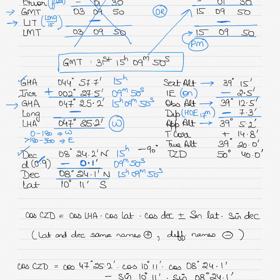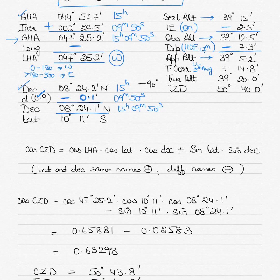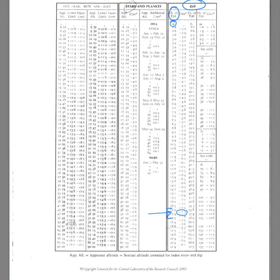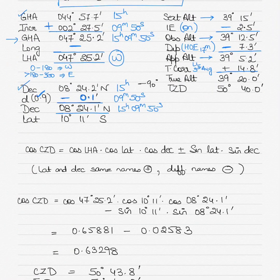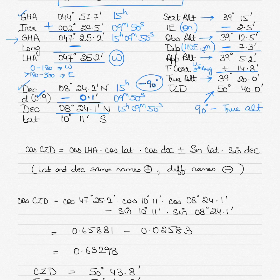Subtracting the height of eye correction gives an apparent altitude of 39 degrees 5.2 minutes. Using this apparent altitude for the Sun's lower limb on 31st August, I find the total correction. Going to the same page, under the total correction column for April to September, lower limb, at 39 degrees 7.2 minutes apparent altitude — no interpolation required — the total correction is 14.8. Applying this gives the true altitude, and then subtracting from 90 degrees gives the true zenith distance (TZD) of 50 degrees 40 minutes.